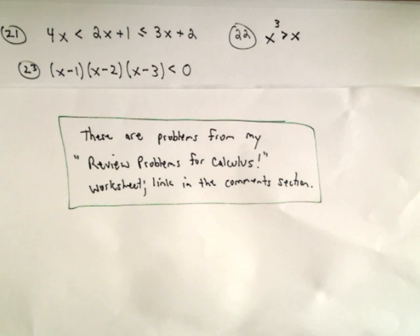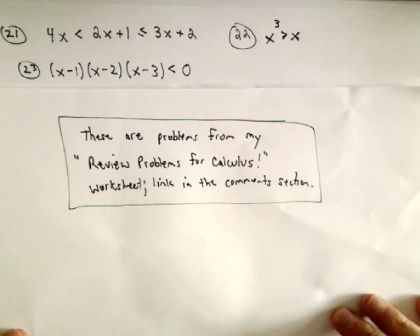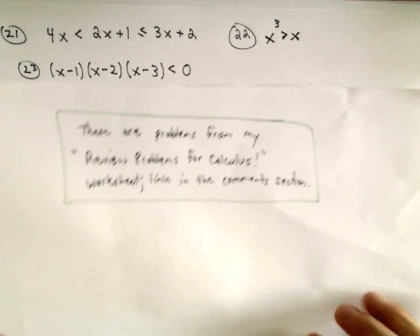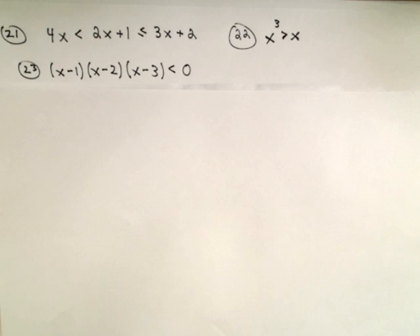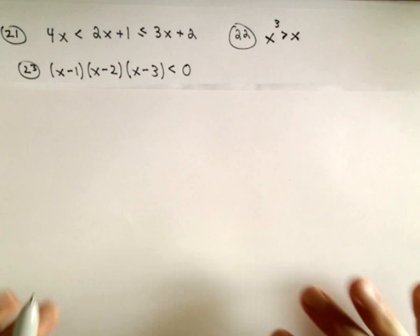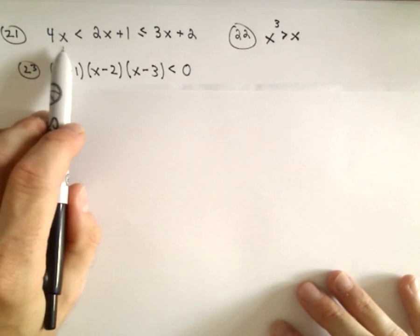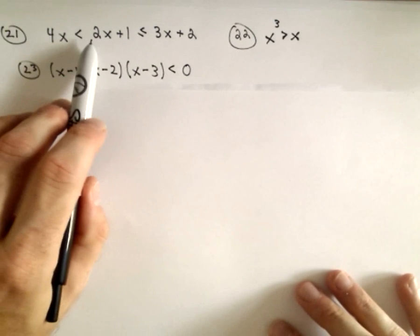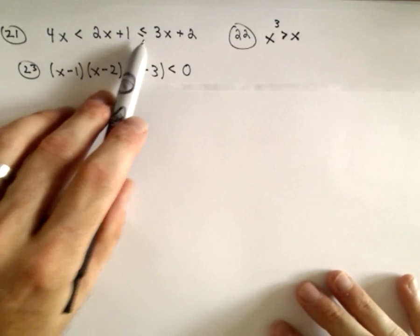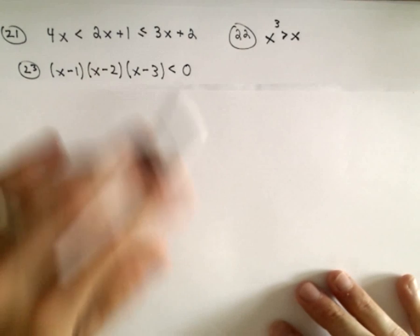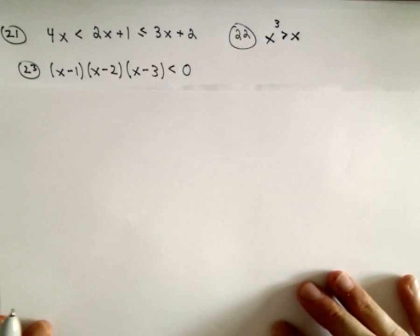Here are a few more practice problems from my Review Problems for Calculus worksheet. In number 21, we've got this inequality: 4x less than 2x plus 1, less than or equal to 3x plus 2.